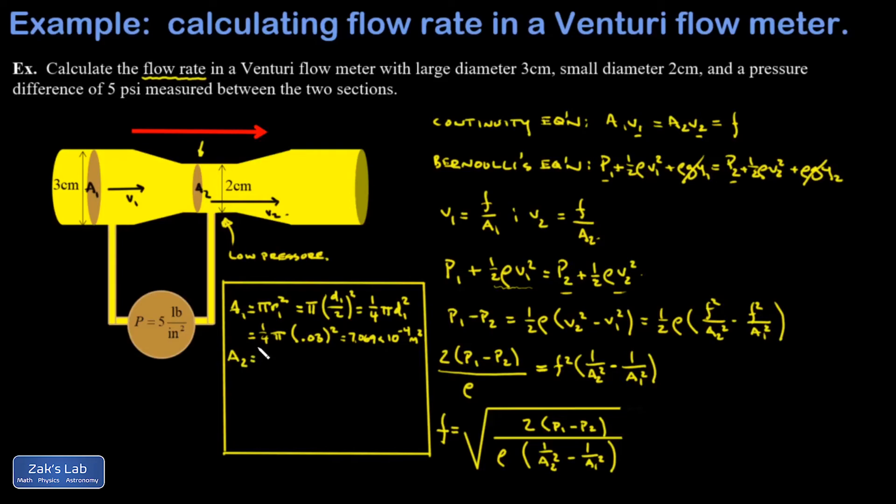We do a similar calculation for A2. This time I'll skip the derivation of how I switch to diameter. My diameter is 0.02 this time, and this time I get 3.142 times 10 to the negative 4 square meters.